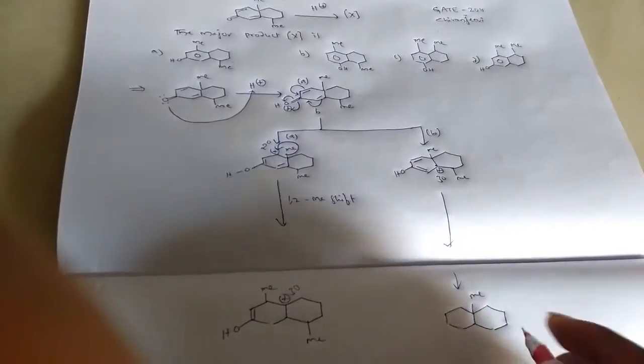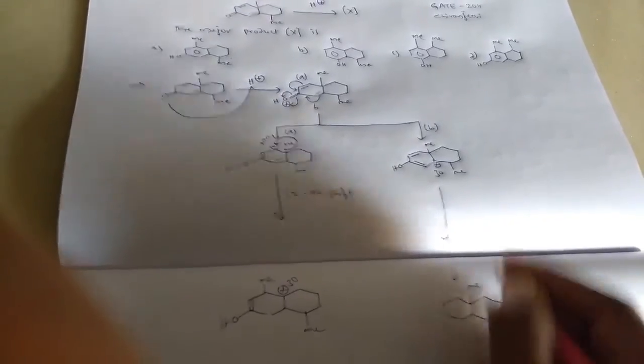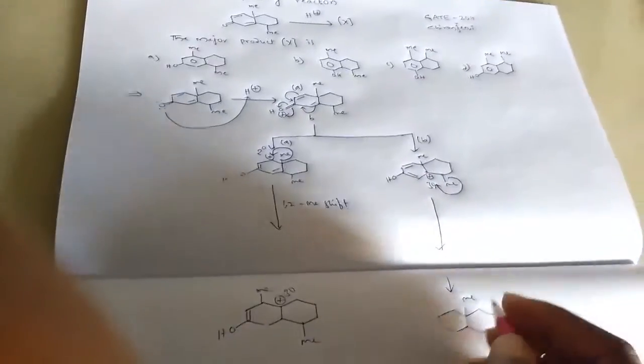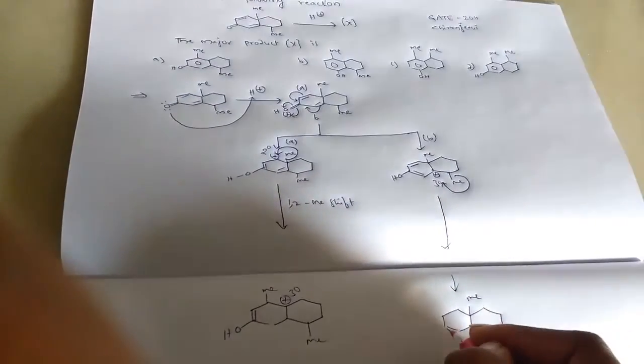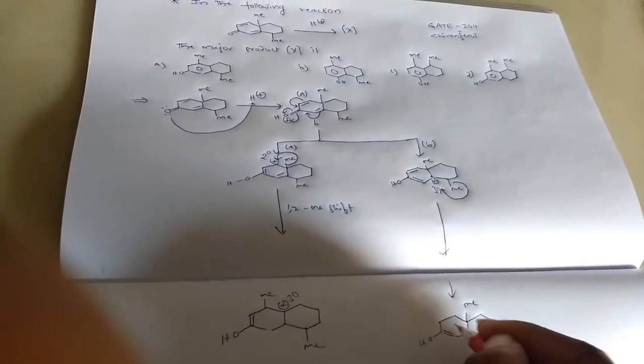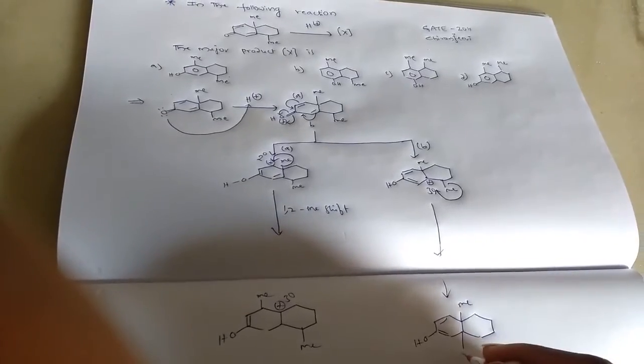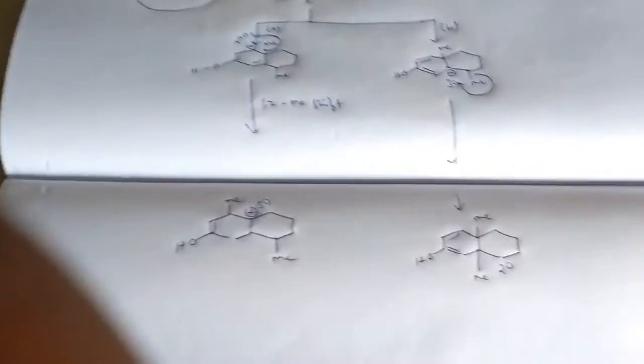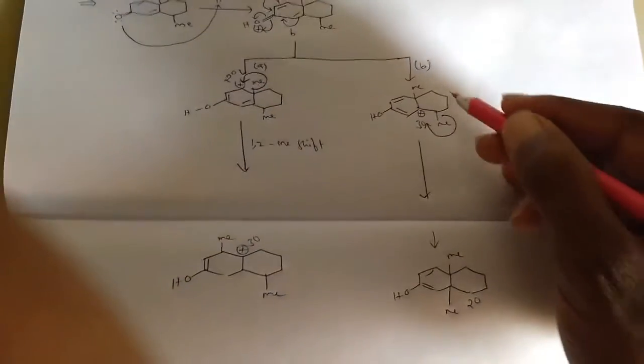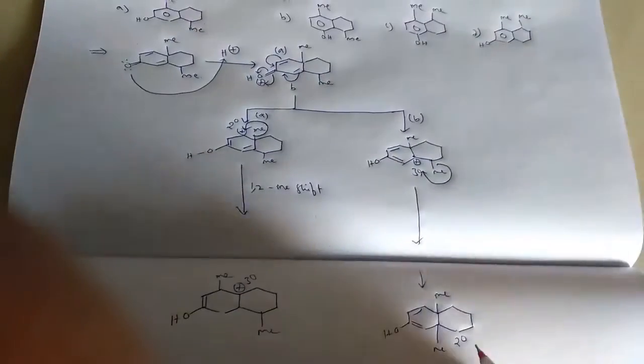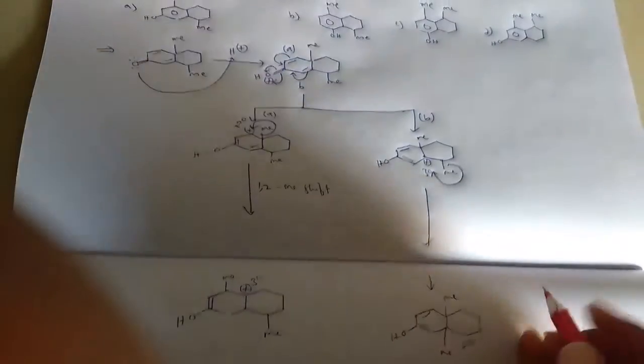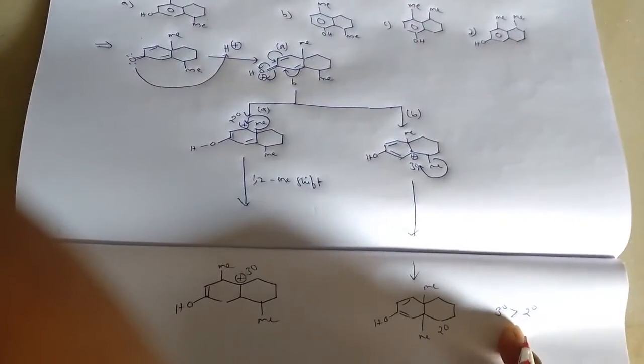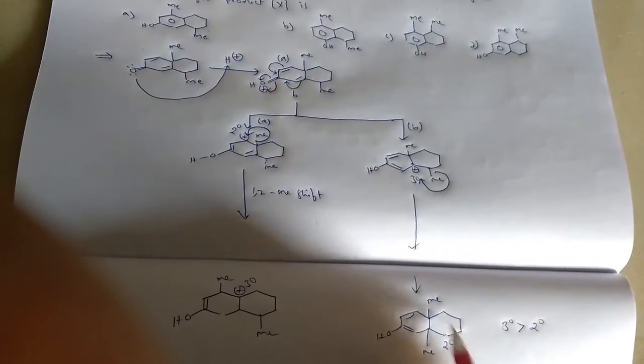This pathway B shows the shift of methyl group onto a tertiary carbocation and then formation of secondary carbocation. So if you observe this B pathway, the tertiary carbocation is converted into secondary carbocation. But tertiary carbocation is more stable when we compare with the secondary carbocation, so that's why the methyl group shift from this one to tertiary carbocation.